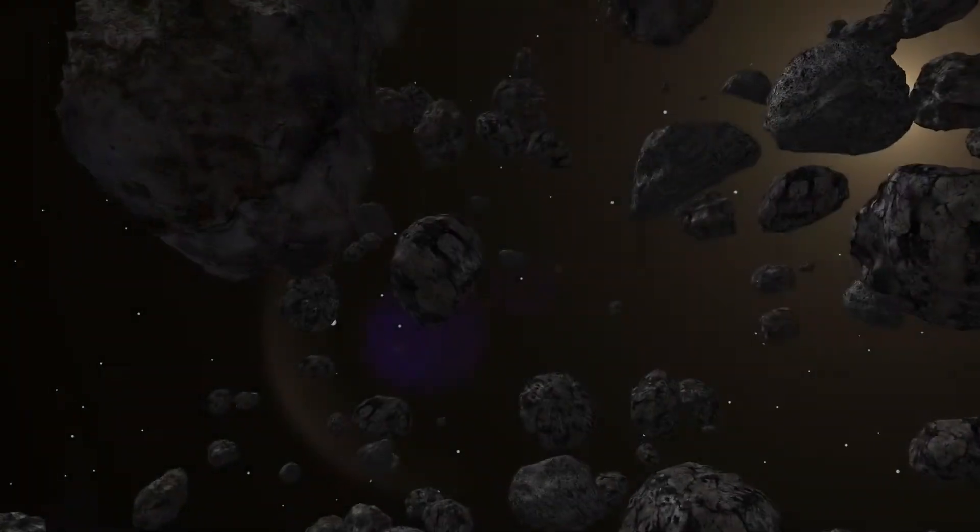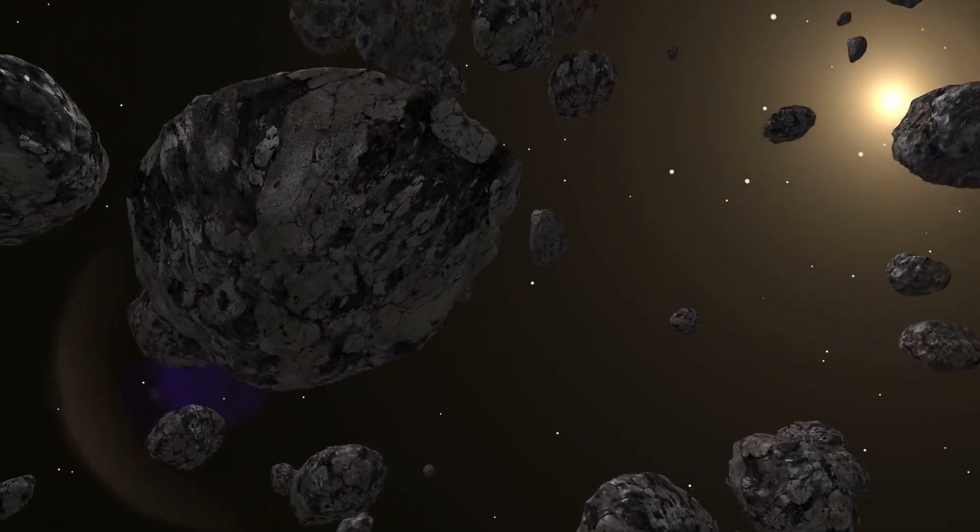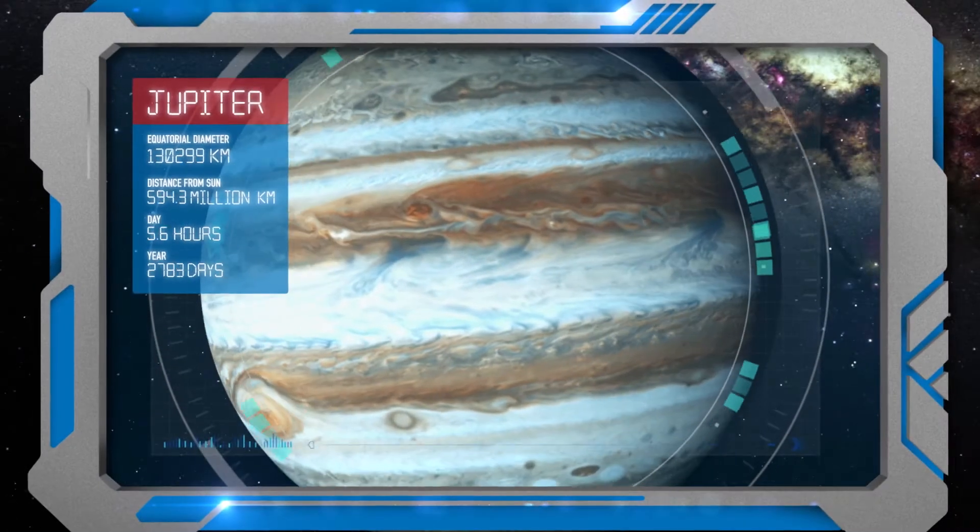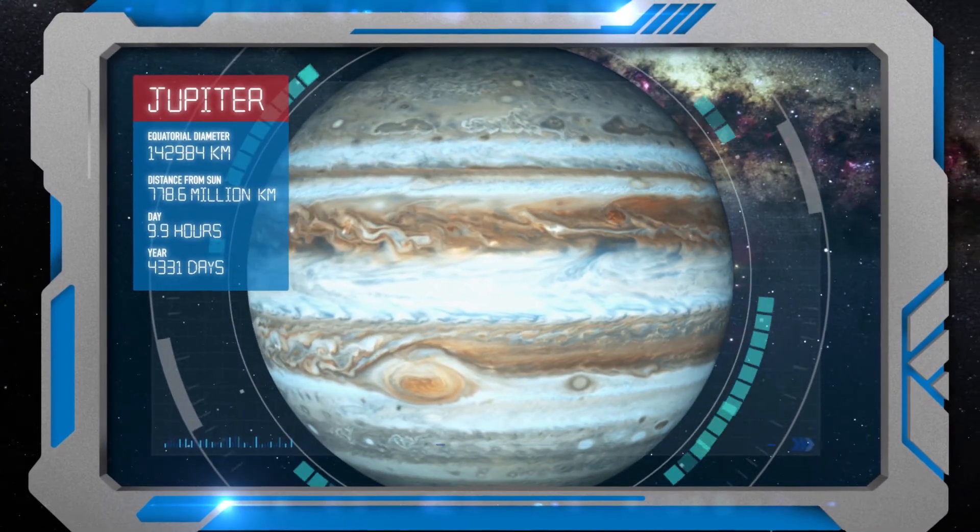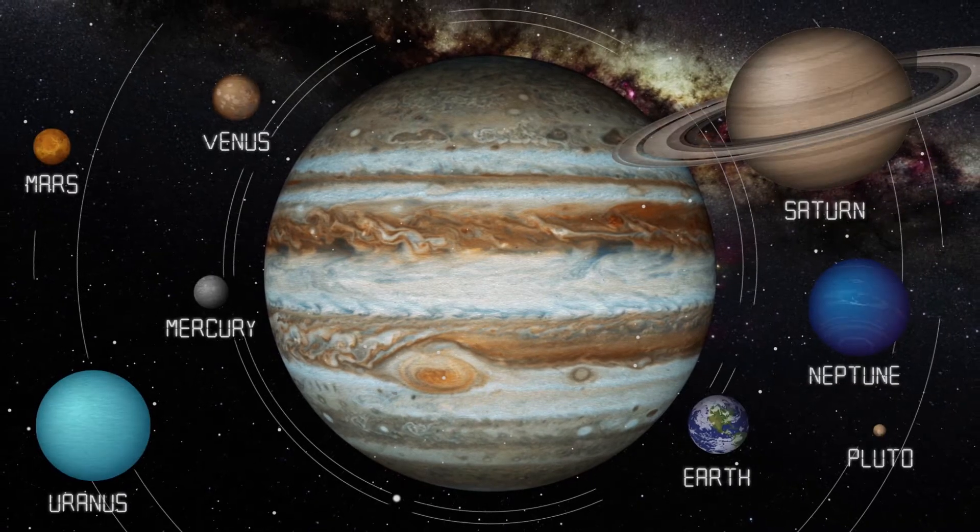A layer of rocky asteroids lies between Mars and the first of the giant gas planets, Jupiter. The largest planet in our solar system, Jupiter could fit every other planet within it.